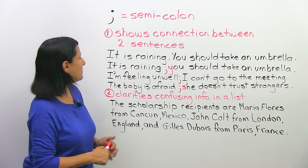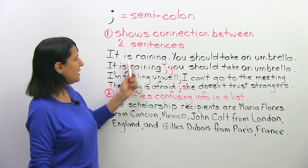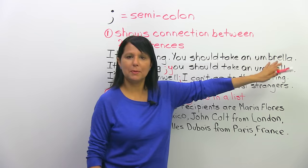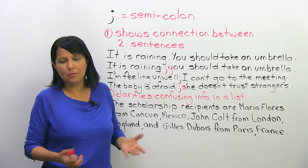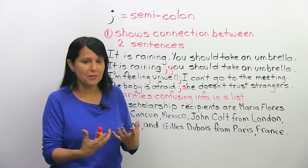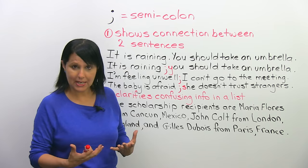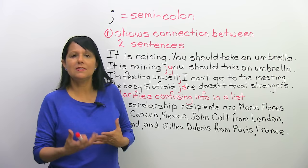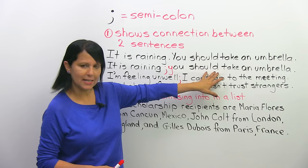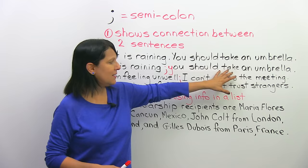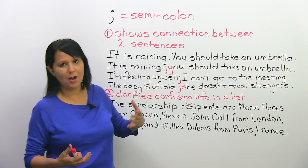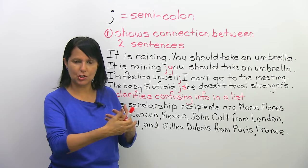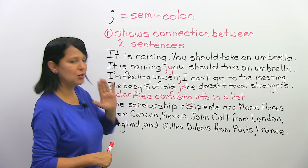Let's look at an example without the semi-colon first: 'It is raining. You should take an umbrella.' Two sentences. Is it wrong to write like this? No, it's not wrong. But if you want to write more powerfully, more effectively, and in a more advanced way, you could say: 'It is raining; you should take an umbrella.' By using the semi-colon, we show that the second sentence is linked to the first — you should take an umbrella because it's raining. Those ideas flow from each other. So instead of the period, we put a semi-colon.